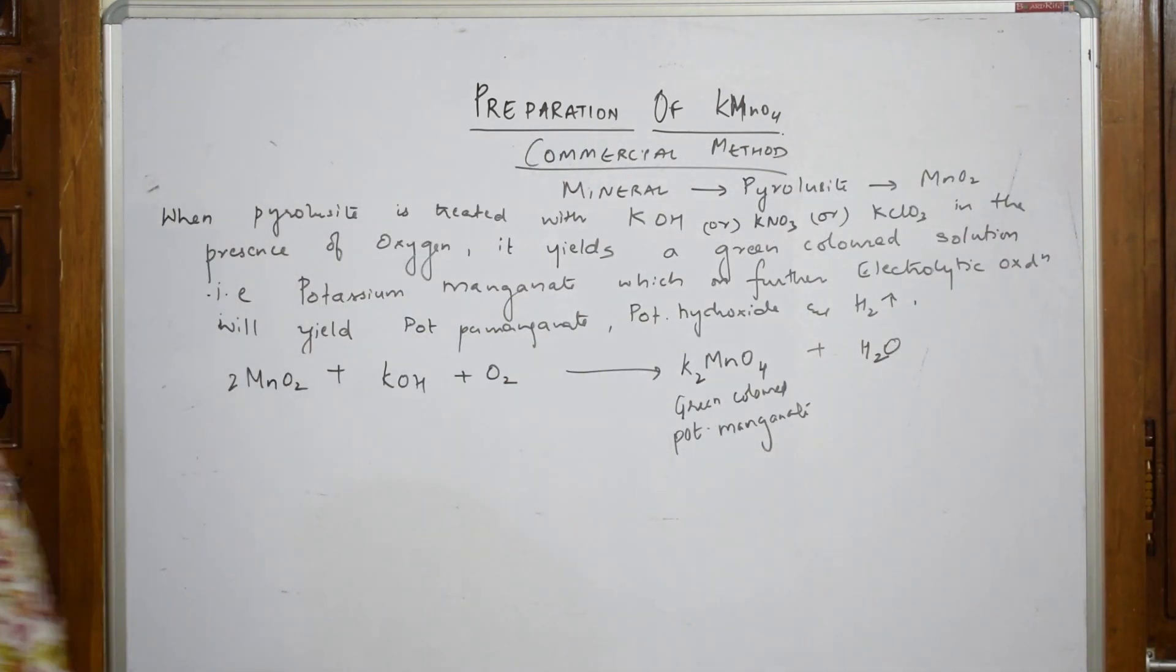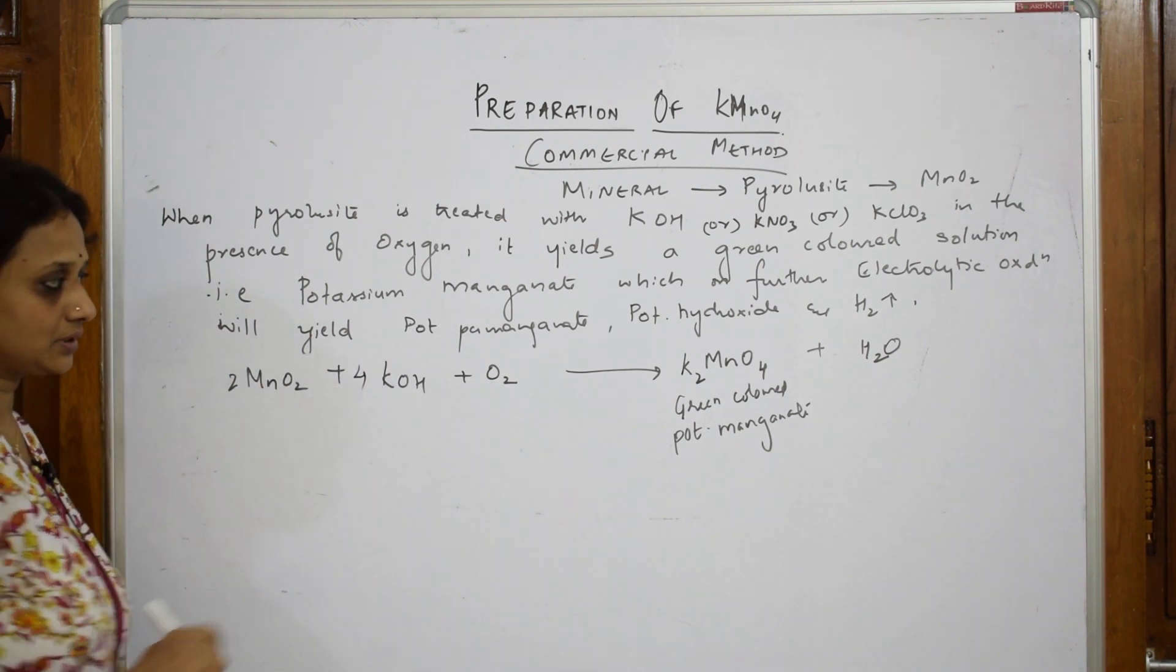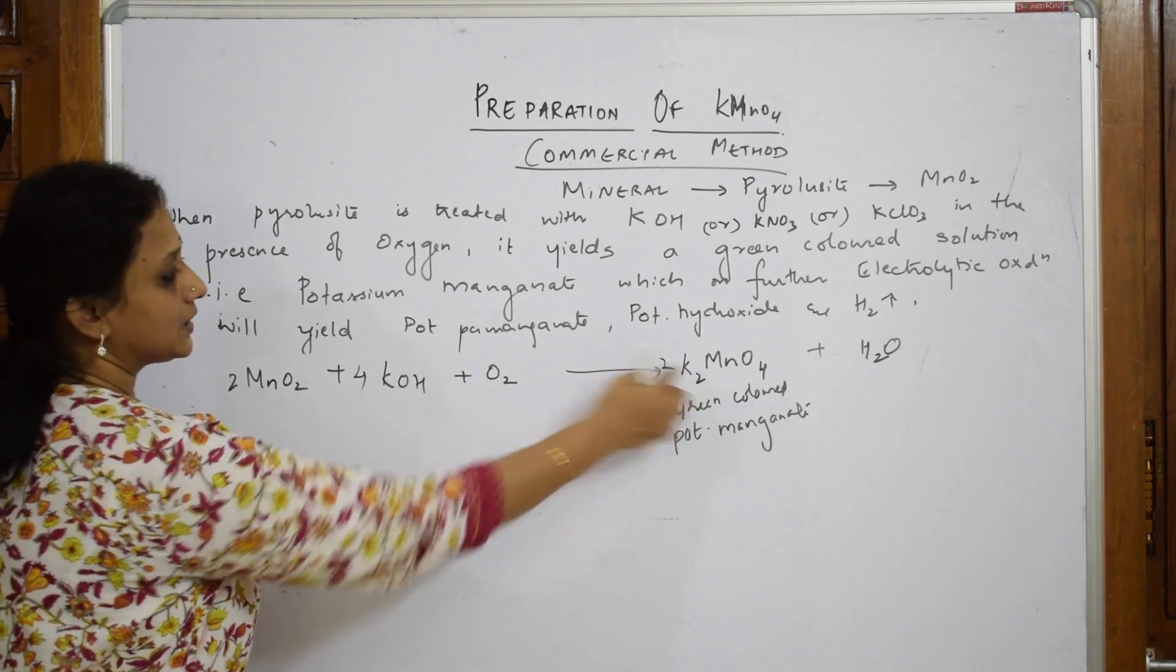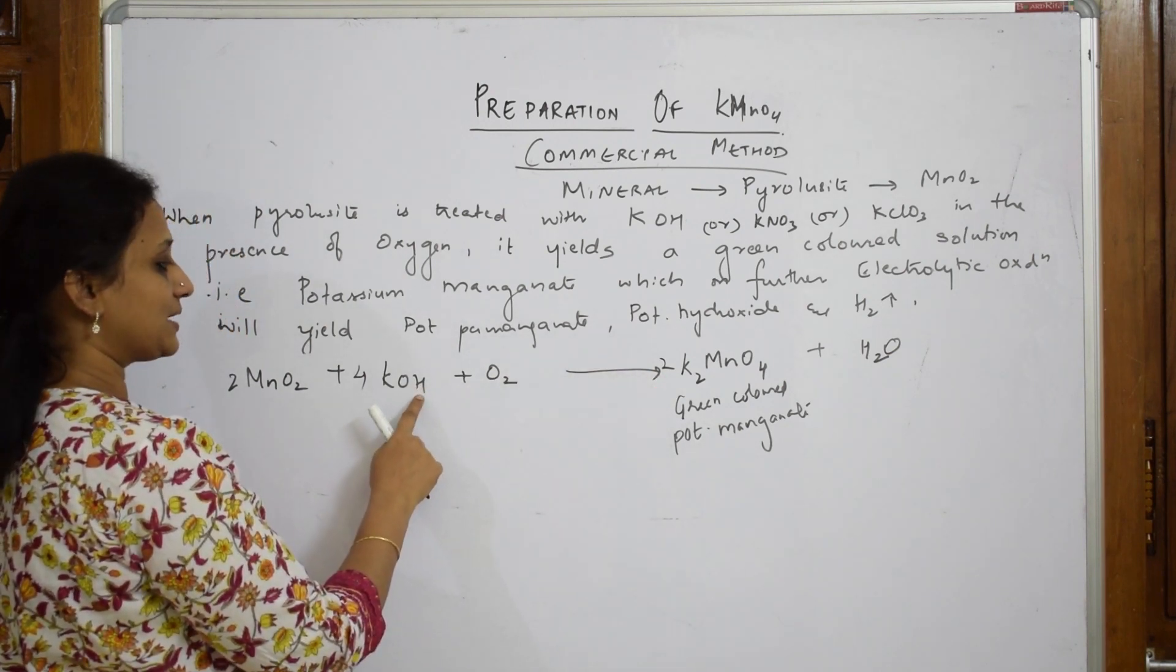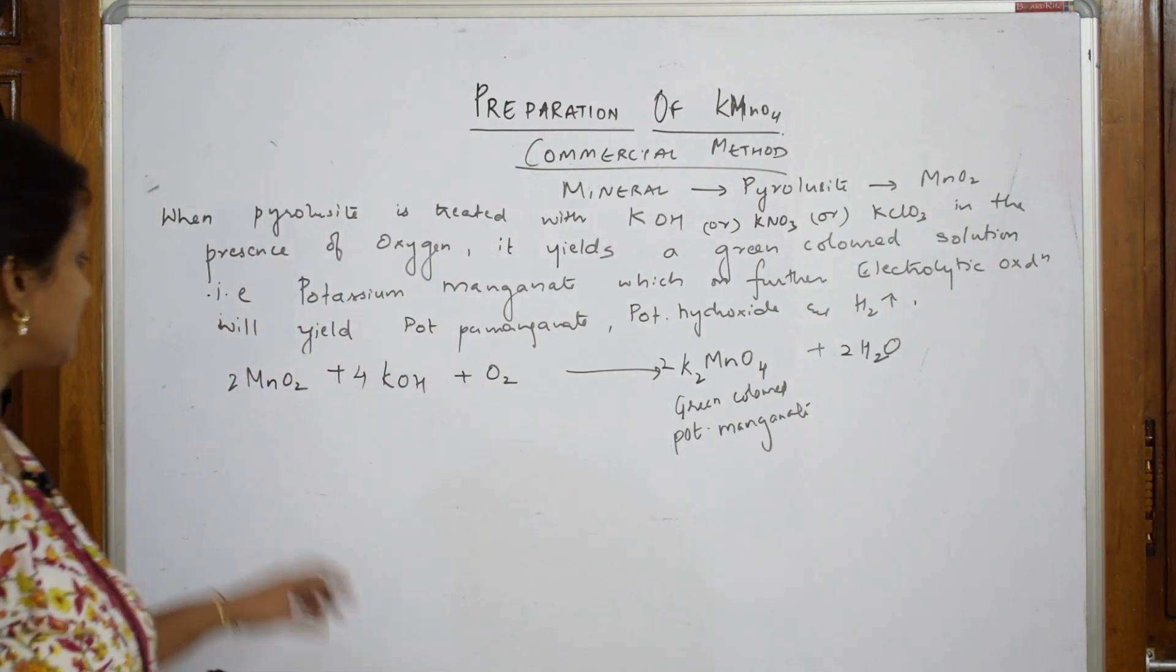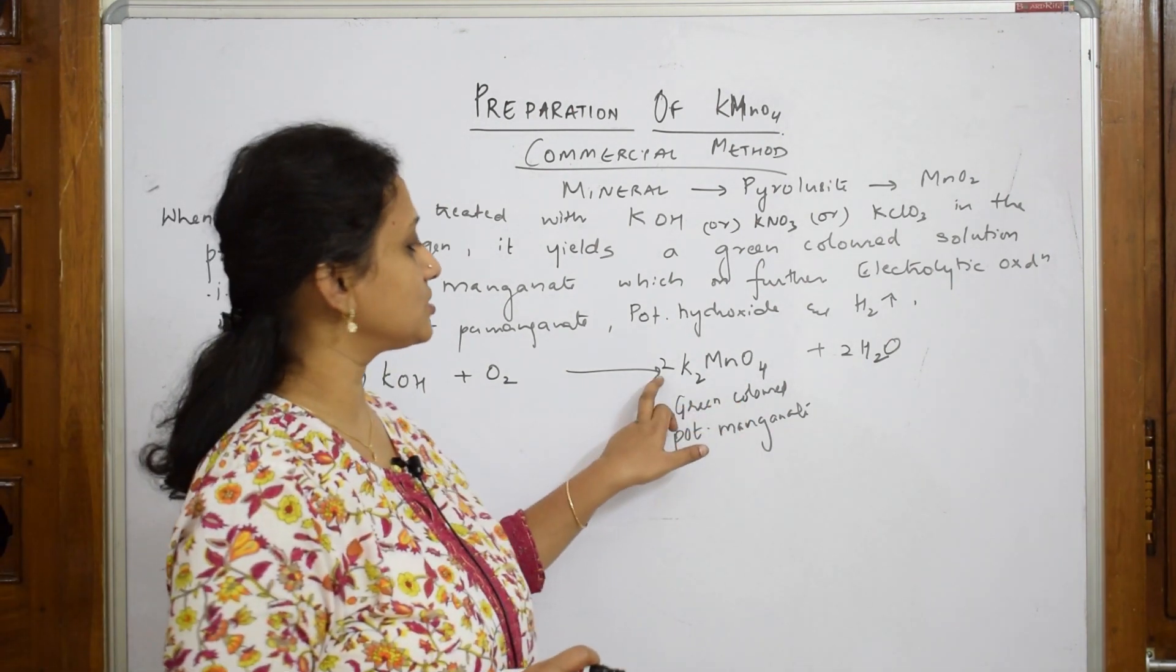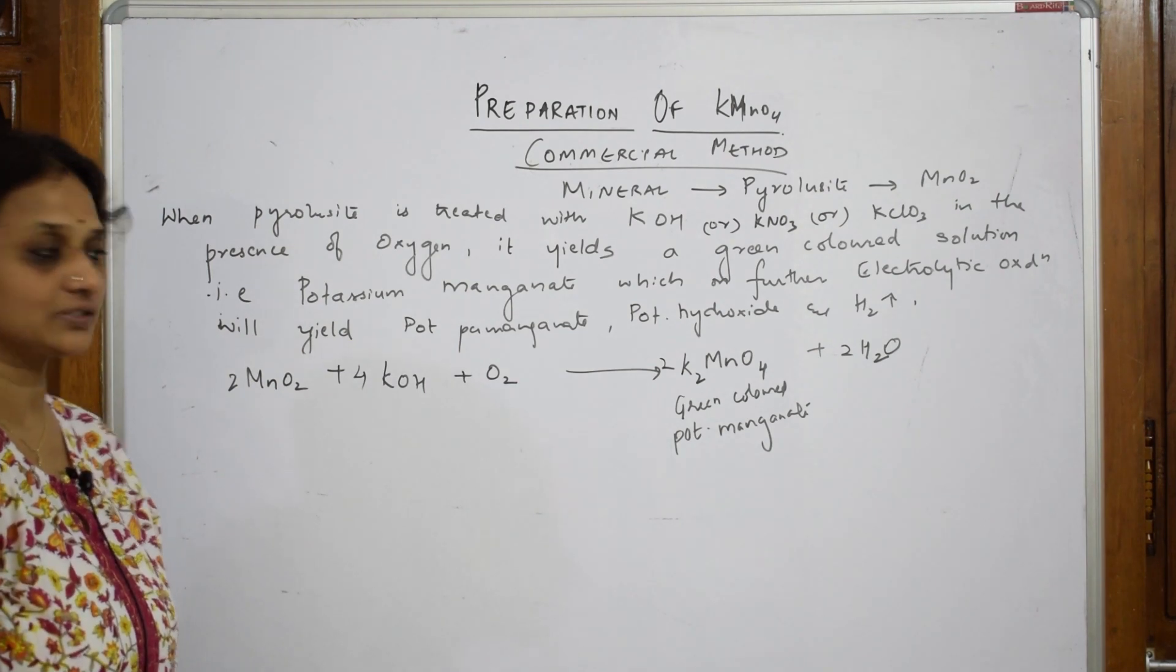Let us now balance and see whether it is correct. First when balancing, I've taken two, then let me take this as four. When I'm taking this as four, this will be two. Now I have to balance hydrogens. Manganese is two, potassium is four. Now let us balance hydrogen. Hydrogen is four, so if I put two. Let us see if oxygens are balanced. Here it is four oxygens, eight oxygens, ten oxygens on this side. Here four, eight oxygens, two, ten oxygens. This is a perfect reaction.